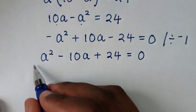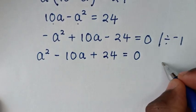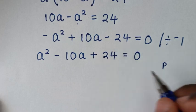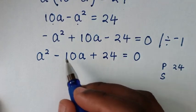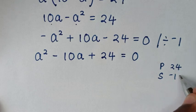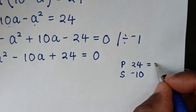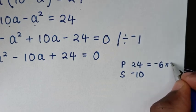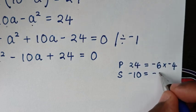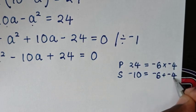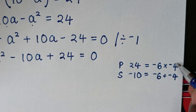From this quadratic equation, we'll solve by grouping and factorization. The product is 24 and the sum is the coefficient of a, which is negative 10. From the product, to get 24, it is the product of negative 6 times negative 4. And the sum to get negative 10 is the sum of negative 6 plus negative 4. So our factors are negative 6 and negative 4.